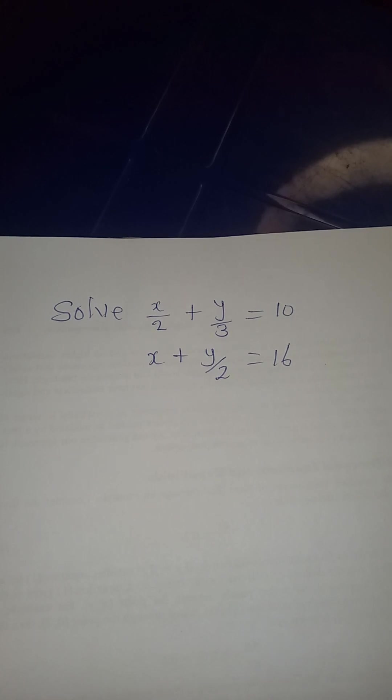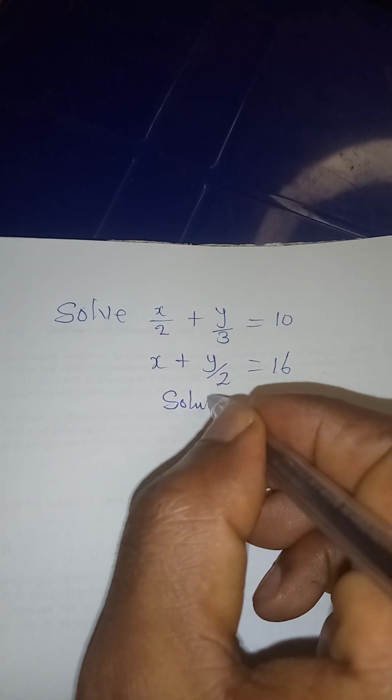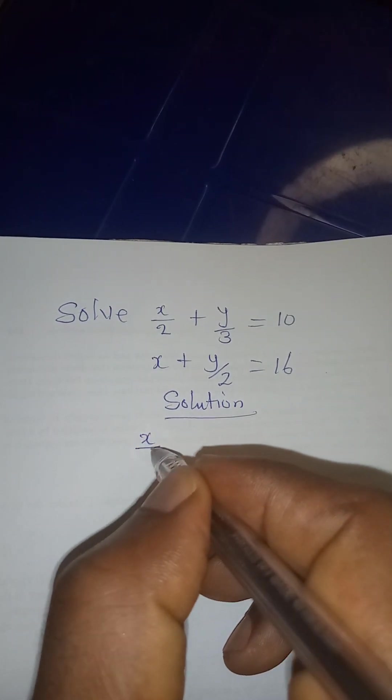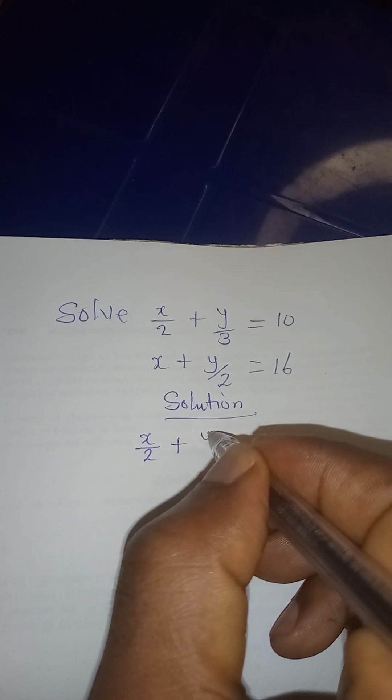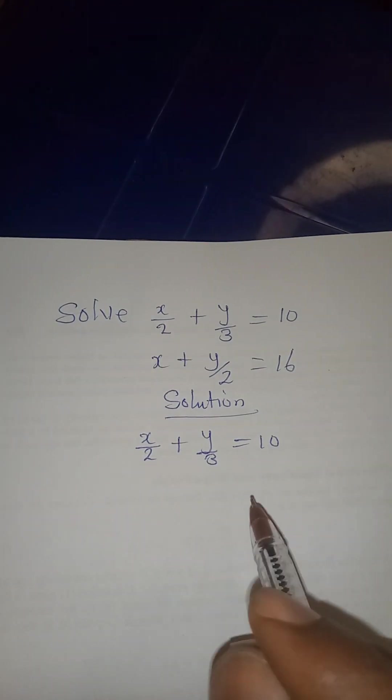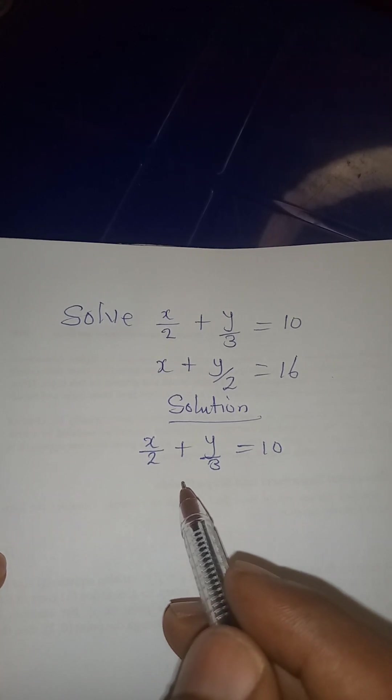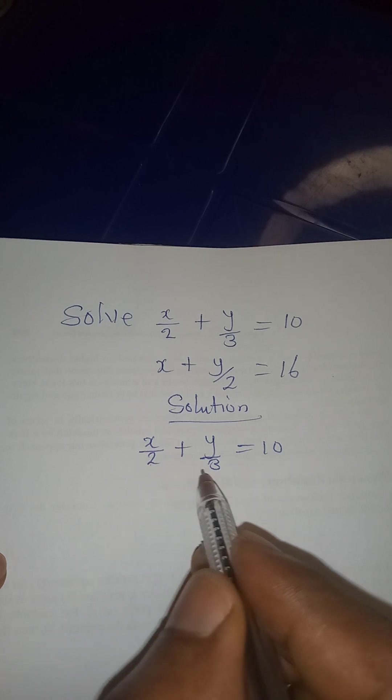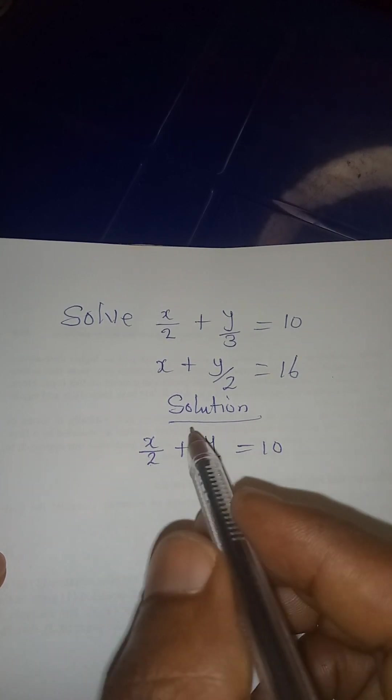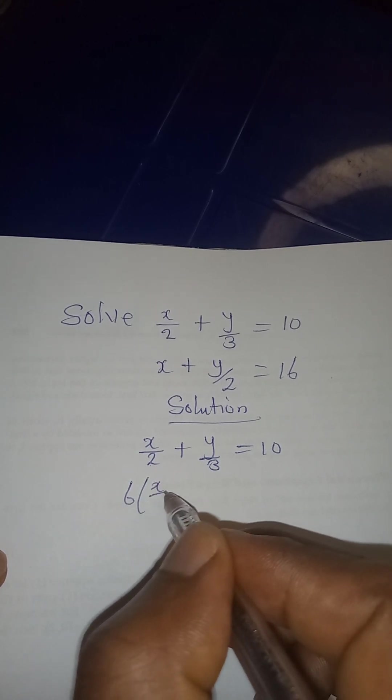Hello everyone, let's solve this simultaneous equation. We have x over 2 plus y over 3 equal to 10, and this is supposed to be our equation 1. But let's still work on this. The LCM of this is 6, so multiply everything by the LCM.